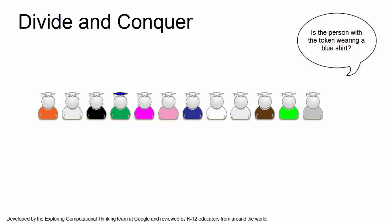Or, is the person with the token wearing a blue shirt? A much more efficient decomposition method is to divide the room in half and ask if the token is on the right side.